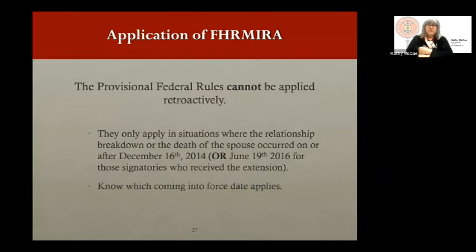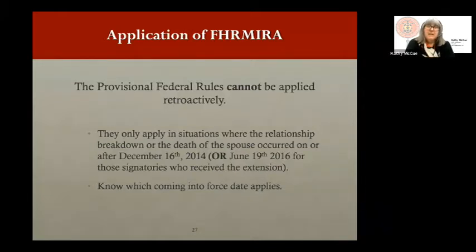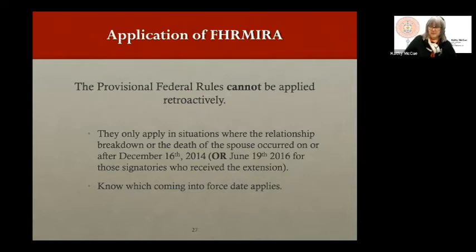Anyone looking for remedies under FORMIRA — if spouses are unable to reach an agreement and one makes an application to the court — is obligated to provide a copy of that application to the First Nation. If you're looking for remedies under the legislation, you must notify council. The provisional federal rules cannot be applied retroactively — they only apply where the relationship broke down or the death occurred on or after December 16th, 2014, or June 19th, 2016 for those signatories on the schedule on the date of royal assent.